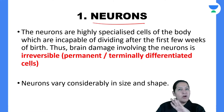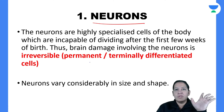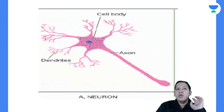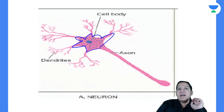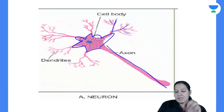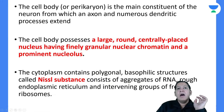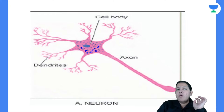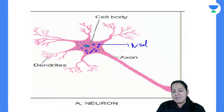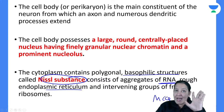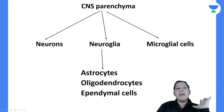Neurons are permanent or terminally differentiated cells — they do not undergo cell division after postnatal life. So, once a stroke occurs in the brain, it is an irreversible injury. A neuron has a cell body, multiple dendrites, and one axon. Inside the cell body, you can see multiple basophilic granules called Nissl substance — these are aggregates of RNA and endoplasmic reticulum. This is an important MCQ from the anatomy portion.